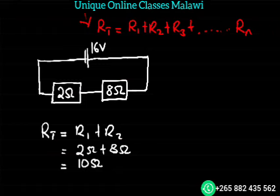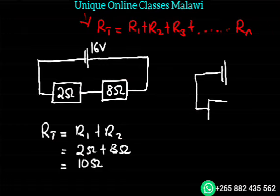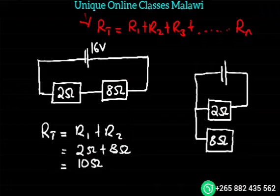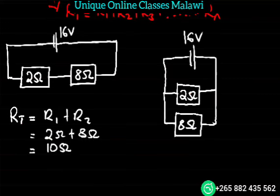Now let's say we have 16 volts. We have 2 ohms and we also have another resistor here which is 8 ohms, and we have 16 volts. The total resistance so far — our parallel circuit — is 4 ohms. There is a branch here.